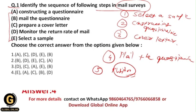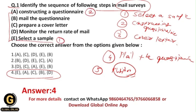The correct answer for this question is option 4: E-A-C-B-D. E (select a sample) is the 1st step, A (constructing a questionnaire) is the 2nd step, C (prepare a cover letter) is the 3rd step, B (mail the questionnaire) is the 4th step, and D (monitor the return rate of mail) is the 5th step.